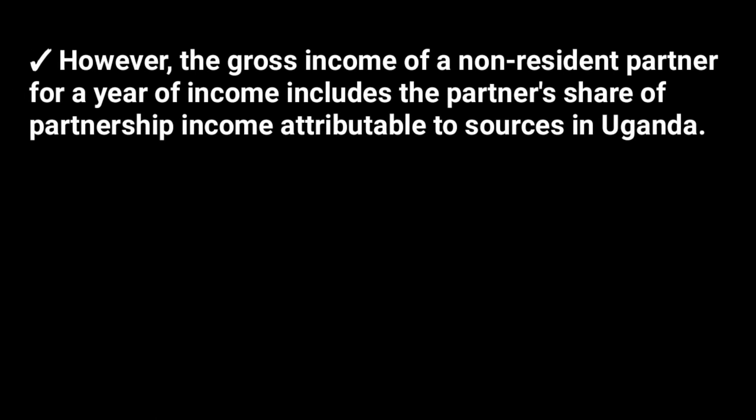The net income of the partnership is shared among the partners using the profit sharing ratios or any other logical method, like the capital contribution ratios. The partners are then taxed on their partnership income after everyone has received their share.